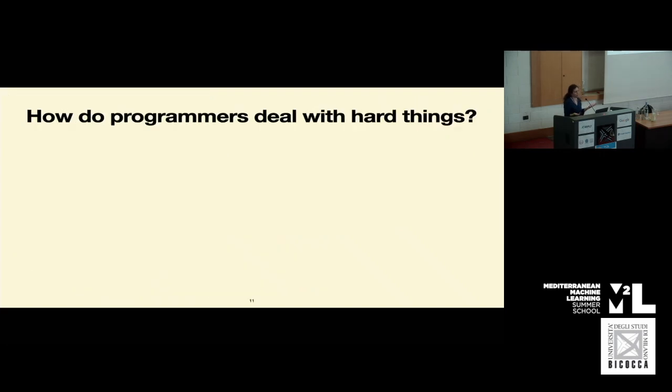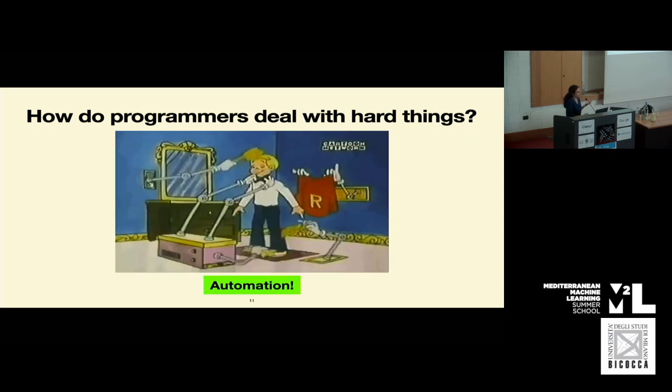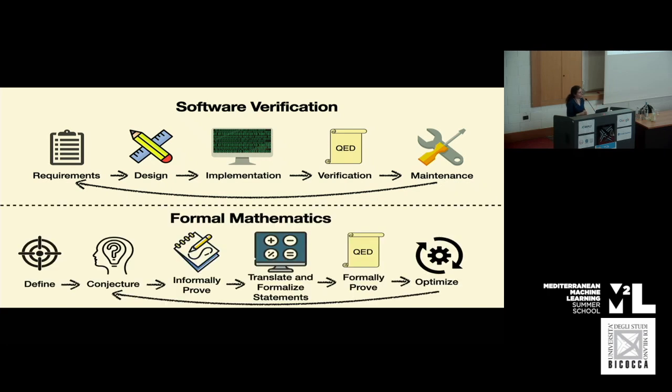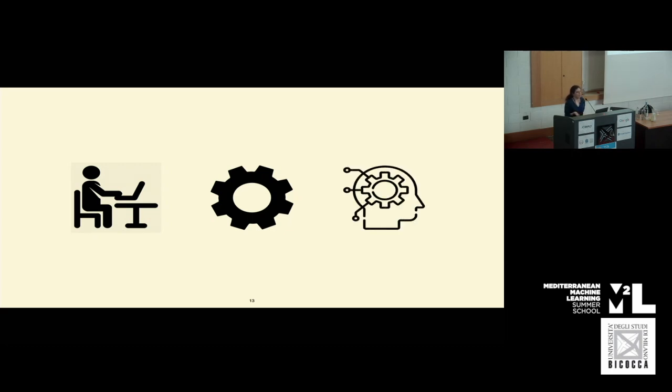But how do we as programmers typically deal with hard things? We try to automate them. So with respect to the software development pipeline, there are a lot of aspects that could be helped with some automation, and similarly for the formalization of mathematics. But for the purposes of this talk, we'll mostly focus on how we can automate proof writing, which, as evaluated now on large-scale benchmarks, assumes that you did most of, if not all of the process beforehand.